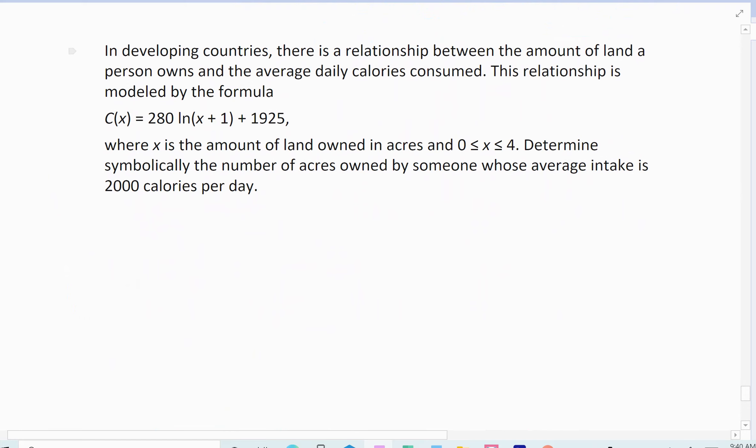All right, one more I believe. In developing countries, there's a relationship between the amount of land a person owns and the average daily calories consumed. The relationship is modeled by that formula. C(x), which is the amount of calories. x is the amount of land owned. Determine symbolically the number of acres owned by someone whose average intake is 2,000 calories per day.